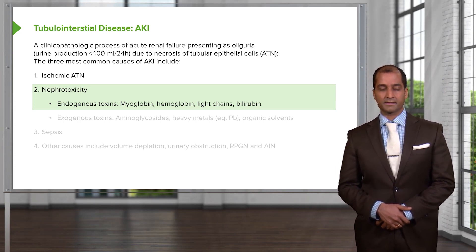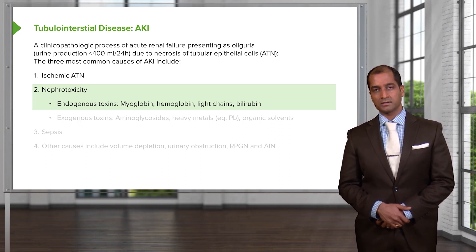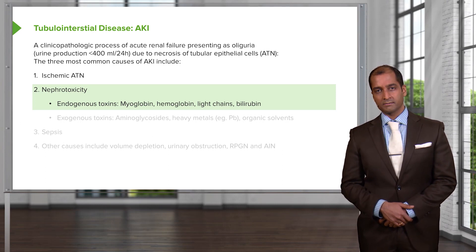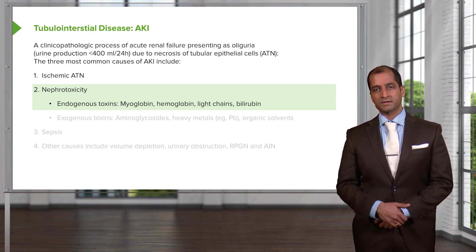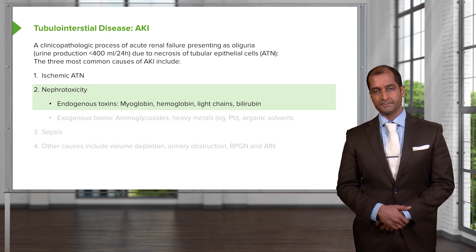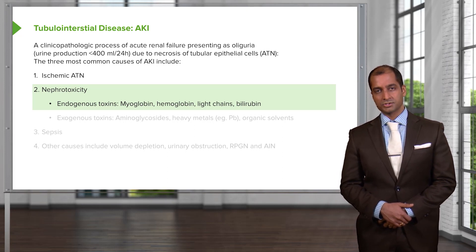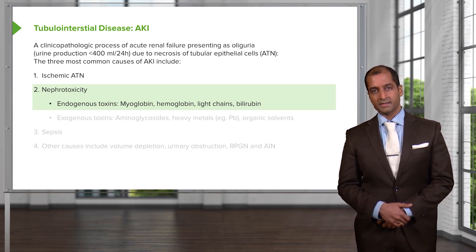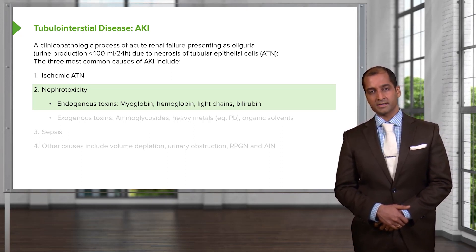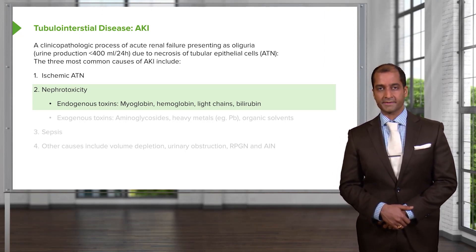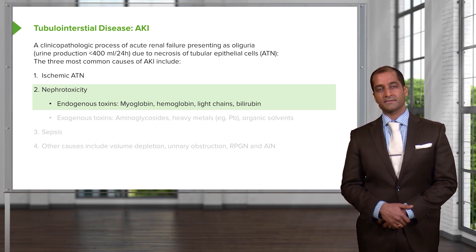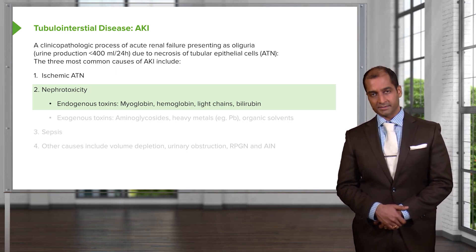Light chains — think about monoclonal gammopathies, including multiple myeloma, in which kappa and lambda chains may cause damage not only to the glomerulus but also to the tubules. And then bilirubin — remember that you normally have urobilinogen in your kidney giving urine its golden yellow color. You might also have conjugated bilirubin, perhaps due to hepatitis, as we discussed in hepatobiliary.